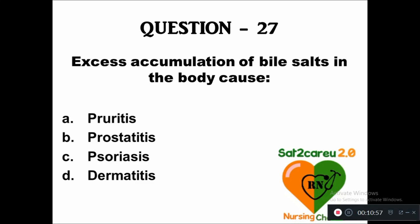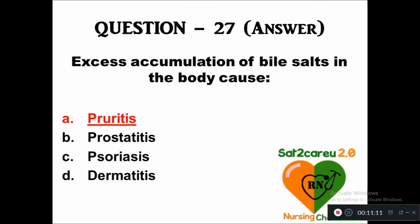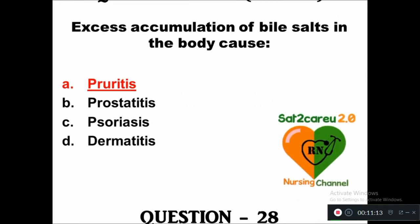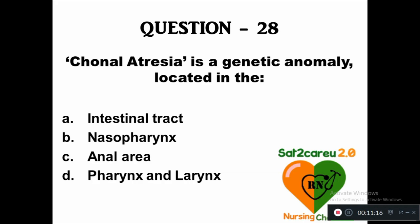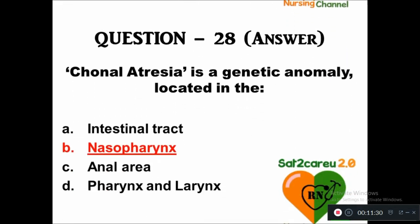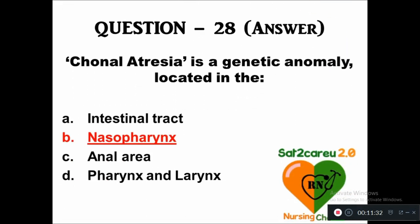Question 27: Excess accumulation of bile salt in the body causes — option A: pruritus, B: prostatitis, C: psoriasis, D: dermatitis. Accumulation of bile salts results in pruritus. Question 28: Choanal atresia is a genetic anomaly located in the — option A: intestinal tract, B: nasopharynx, C: annularia, D: pharynx and larynx. The right answer is nasopharynx.